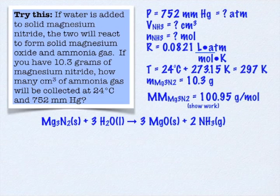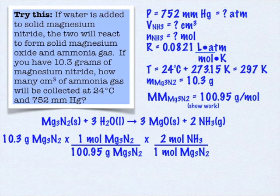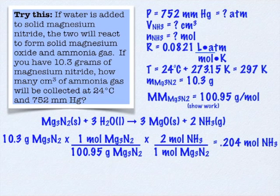Then I'm ready to go. I can set up a stoichiometry problem starting with the 10 grams of magnesium nitride. Now, I'm going to stop at moles. Don't go to grams of ammonia because you're going to have to go back to moles anyway to get into the ideal gas law. So, 10 divided by 100 times 2. 10 over 100, you're looking at about 0.1, and times 2 is about 0.2. So, I end up with 0.204 moles of ammonia.